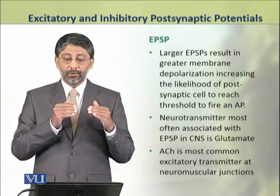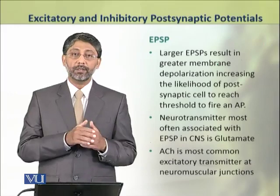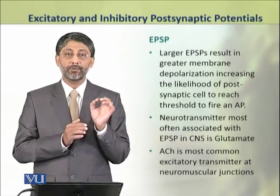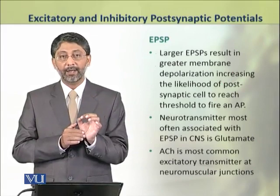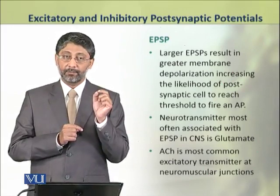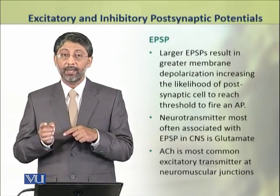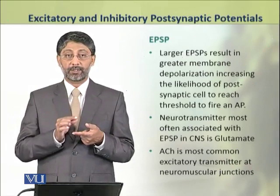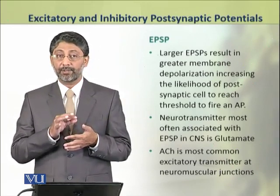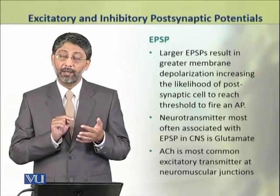The neurotransmitter most often associated with producing the excitatory postsynaptic potential in the central nervous system is glutamate. While in the peripheral nervous system at the neuromuscular junctions, excitatory postsynaptic potentials are generated, and the most important neurotransmitter there is acetylcholine.